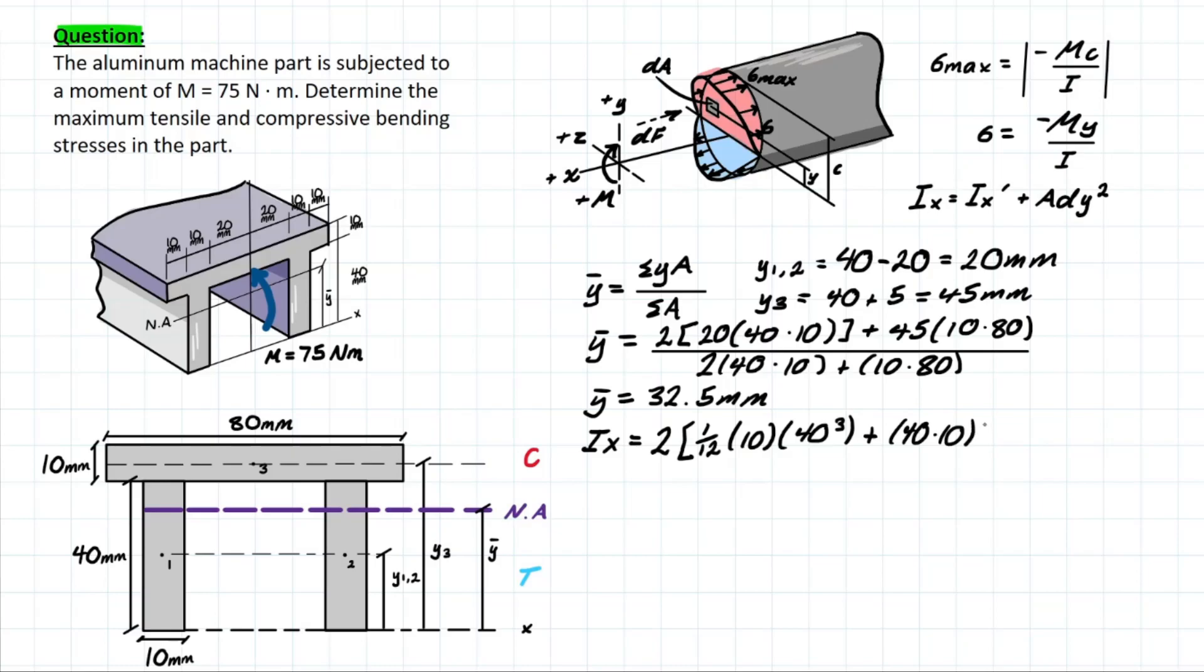The area is simply going to be 40 times 10, which we had previously, and the distance y. So what this distance y is, is simply taking the distance from the global to the neutral axis, and subtracting the original distance from the centroid to get this distance here, which is simply the distance from the neutral axis to the local centroidal axis. So that value is going to be 32.5 for this y value, and we need to subtract the rest of this y1 and y2, which is simply, as we saw for previously, it's 20, and then we square it.